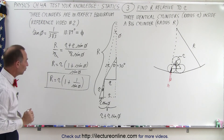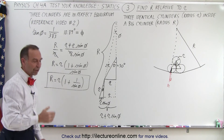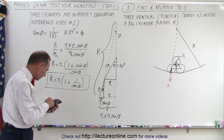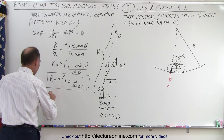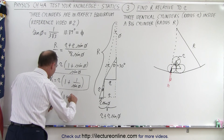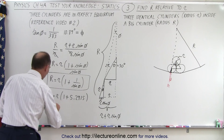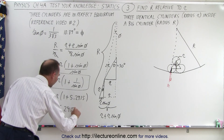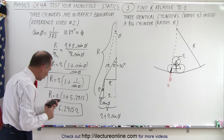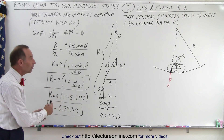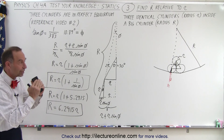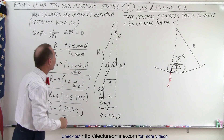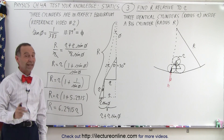So now we have a relationship between the big radius of the big cylinder and the small radius of the small cylinder. Let's plug in some values. We take the sine of that angle and take the inverse of that. We get big R equals small r times one plus 5.2915, or big R equals 6.2915 times the small radius. This is the relationship between the big radius and the small radius in order for the three cylinders to be perfectly in balance.